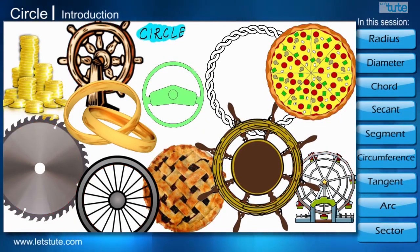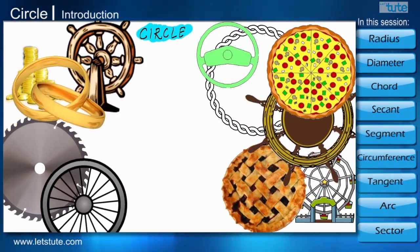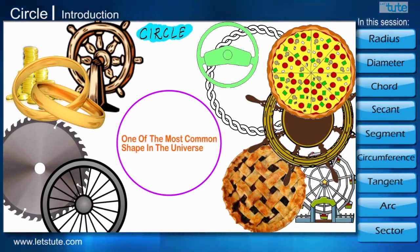For example, the shape of a bangle, shape of a pizza, bicycle wheel, coins, etc. Circle is one of the most common shapes in this universe.